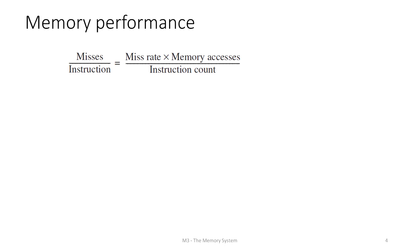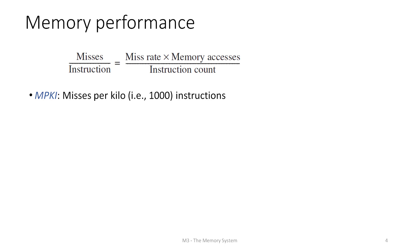Misses per instruction is also expressed as MPKI — misses per kilo instructions. In various design choices you will encounter this term; for example, 30 misses per every 1000 instructions means MPKI is 30.